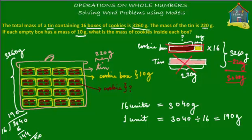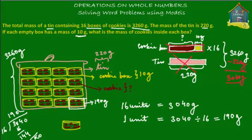What that means is one of these yellow cookie boxes with brown cookies in it has a mass of 190 grams. So this cookie box — the yellow cookie box with brown cookies — has a mass of 190 grams for the entire thing. And what else we know is the empty cookie box without the cookies has a mass of 10 grams.